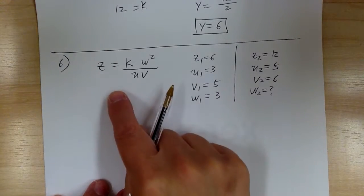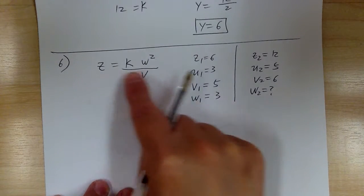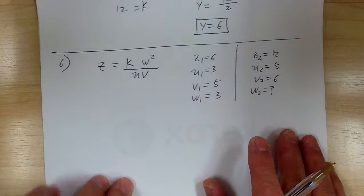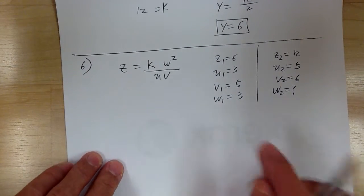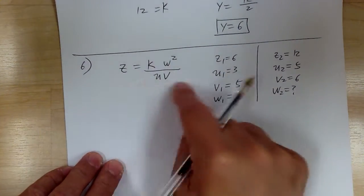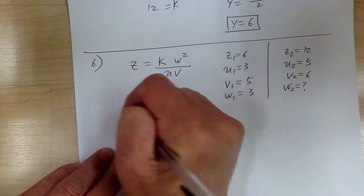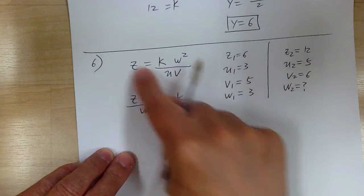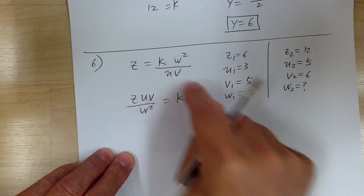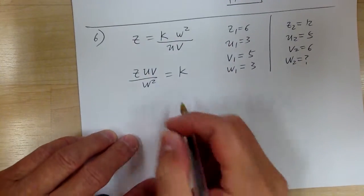So again, you can substitute first, or you can move variables first to solve for k. Usually it's easier, it's better to go and move things. So you're going to get z times u times v over w squared equal to k. You move it over, you multiply and divide. So you get that.